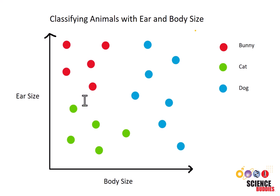So let's say we have a new data point and we want to try to use this data to classify it. Well, we can check the points that are closest to it. If our K-value, or number of neighbors, is 1, then we can just check the point closest to it, which in this case would make our new point a bunny.